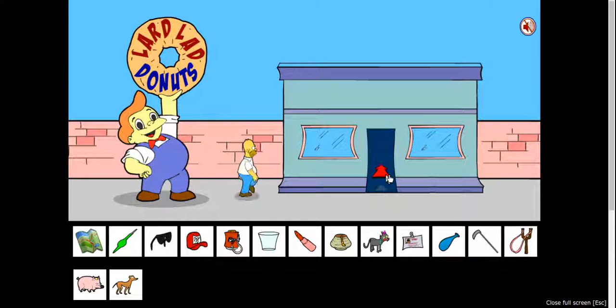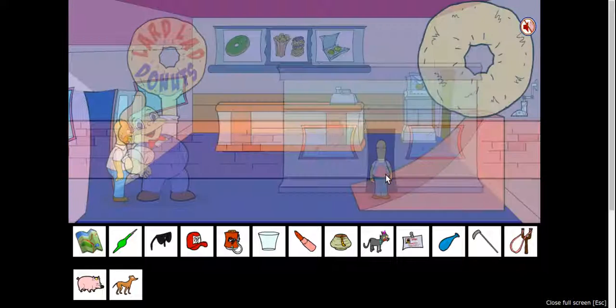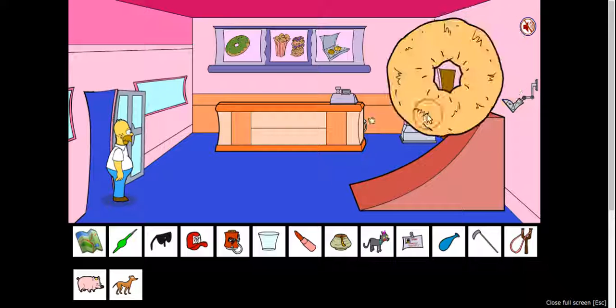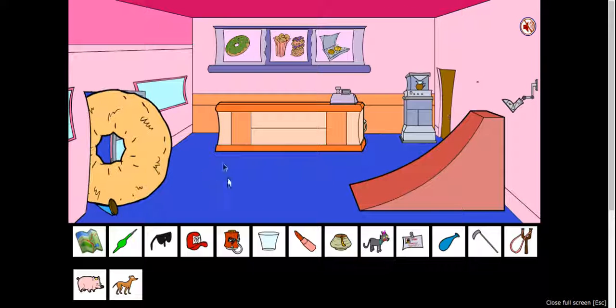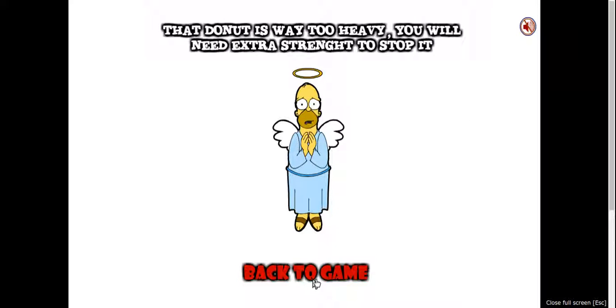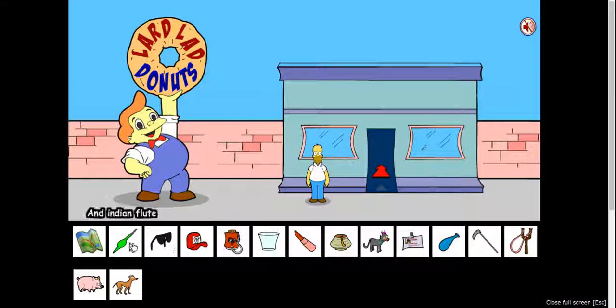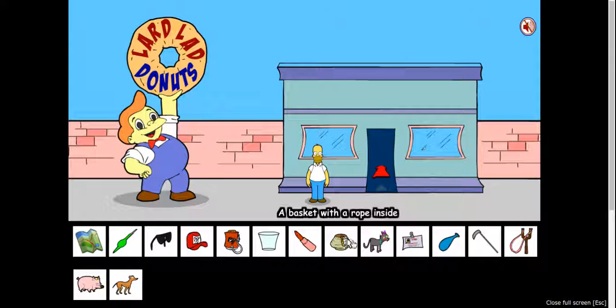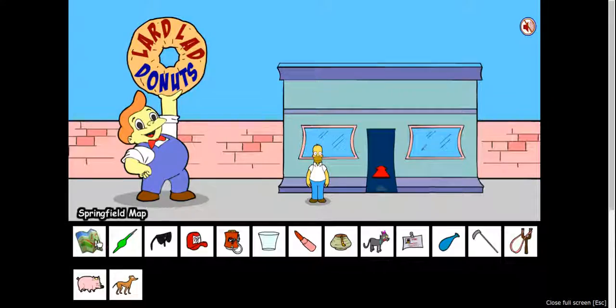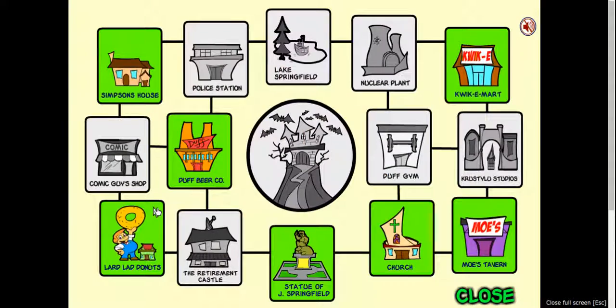I know I'm gonna get smashed by a giant donut. There's got to be a way to get around this. Extra strength. Okay, well I'm guessing that we have this Indian flute, there's gonna be a snake or we're gonna do some magical stuff, I don't know.